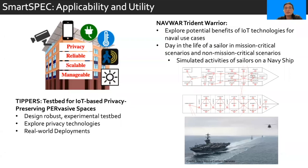SmartSpec has also been used in other papers and contexts, such as TIPRs and NAVWAR Trident Warrior. The TIPRs project aimed to design a robust experimental testbed to explore emerging privacy technologies with real-world deployments. In this context, NAVWAR Trident Warrior looked at deploying the TIPRs on a Navy ship to explore the potential benefits of IoT technologies in various naval use cases concerning the daily life of a sailor, in both mission-critical scenarios and non-mission-critical scenarios on a Navy ship. Specifically, SmartSpec data generation was used to simulate the activities of sailors on the ship, and use cases such as fall detection and energy management were examined.